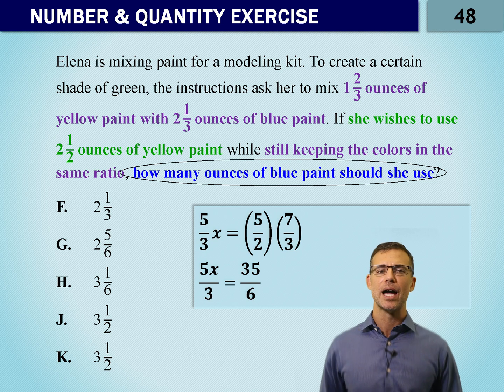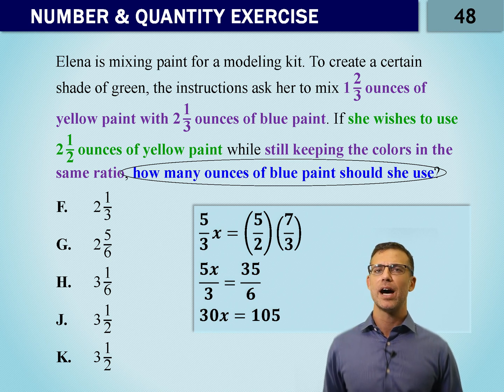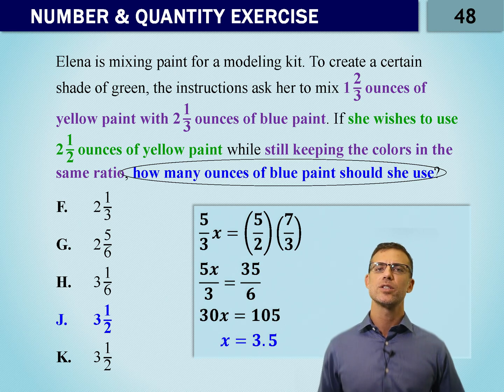And again, we can cross multiply. Six times five X makes thirty X. Three times thirty-five makes one oh five. One oh five divided by thirty means X equals three point five. Our answer is J.